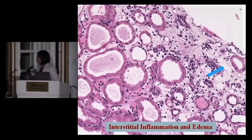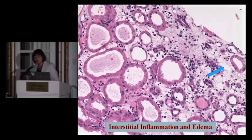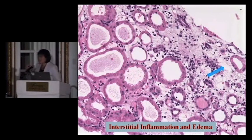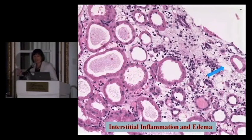Again, the tubules here look pretty preserved, and again there are inflammatory cells in the interstitium. In addition, there is an empty space visible. This is a pattern of interstitial edema.